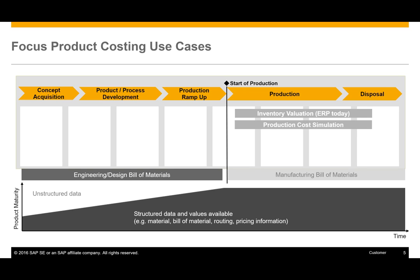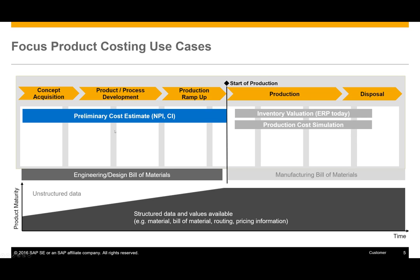The key inputs needed are: what materials are being sourced, the bill of materials and design structure, the routings used for manufacturing, and related pricing information — from component prices to activity prices. SAP addressed this gap with SAP Product Lifecycle Costing. The first use case is the preliminary cost estimate, relating to a pure engineering project such as a new product introduction or continuous improvement project — calculating for a lot size of one.